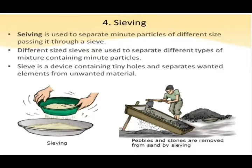The fourth method is sieving. Sieving is used to separate minute particles of different sizes by passing the mixture through a sieve. Different size sieves are used to separate different types of mixtures containing minute particles. A sieve is a device containing tiny holes that separates wanted elements from unwanted material. For example, pebbles and stones are removed from sand by sieving.